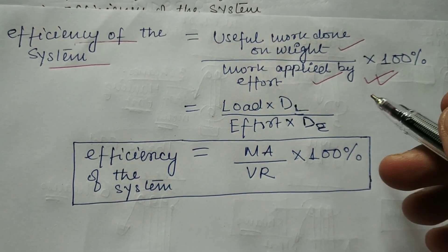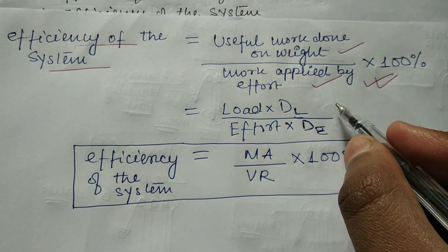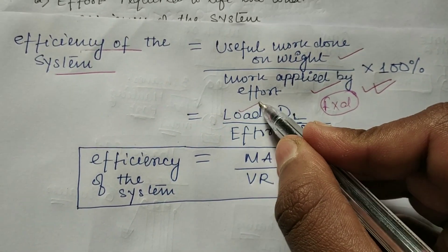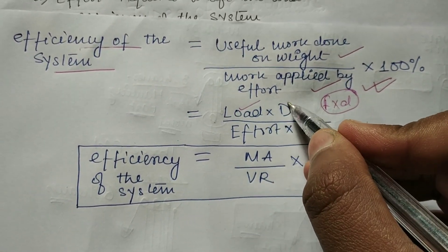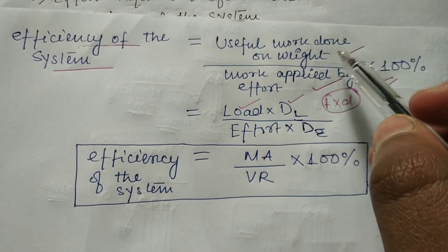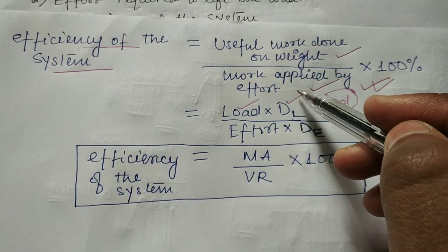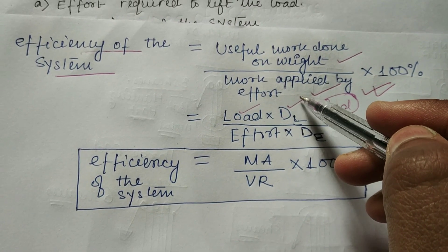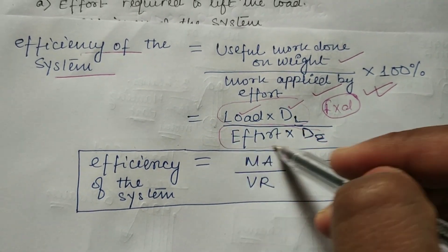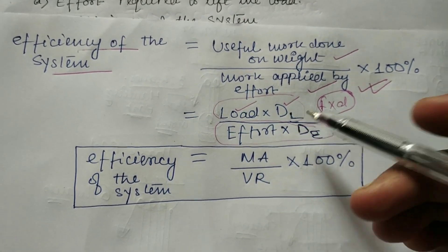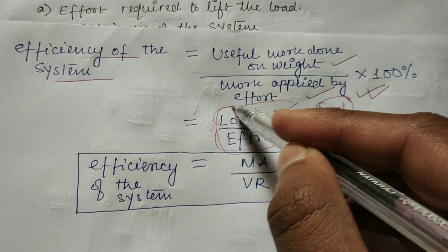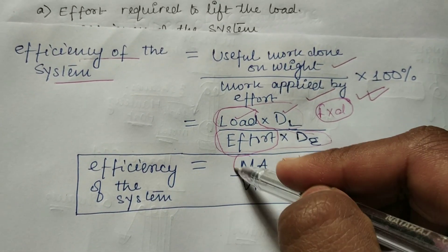As you all know, work done is equal to force into displacement. So here the force is load and displacement is DL. Work done by the weight is load into its displacement, and work done by effort is effort into its displacement. Load divided by effort equals mechanical advantage.